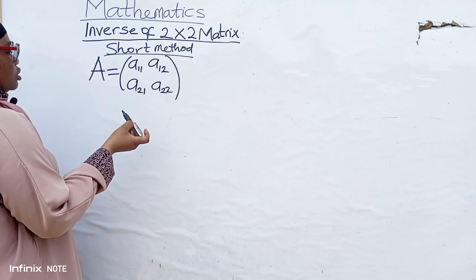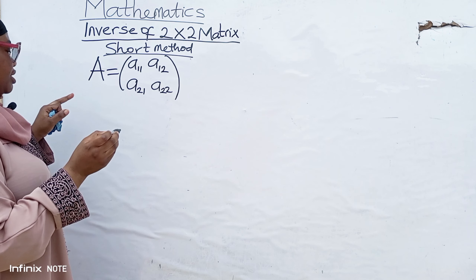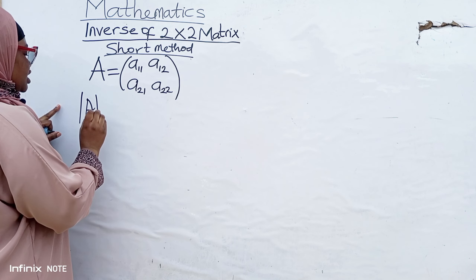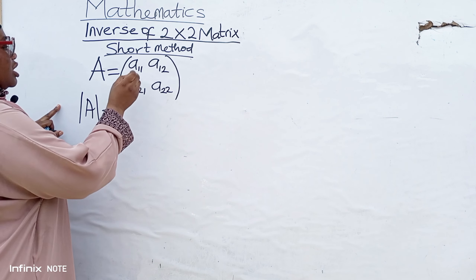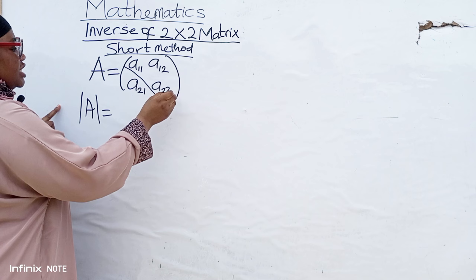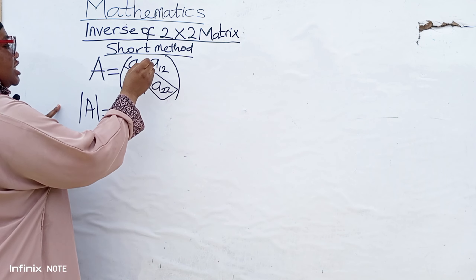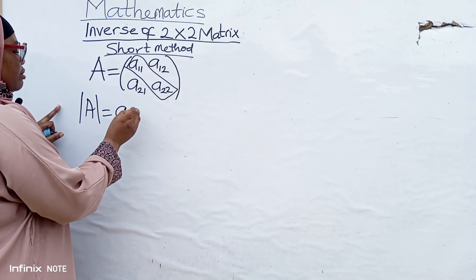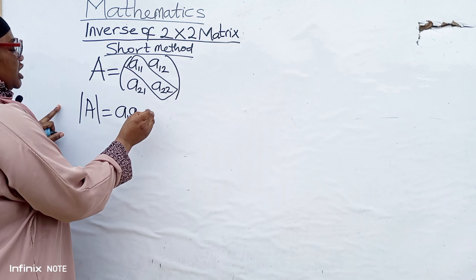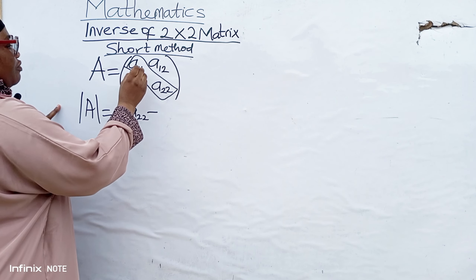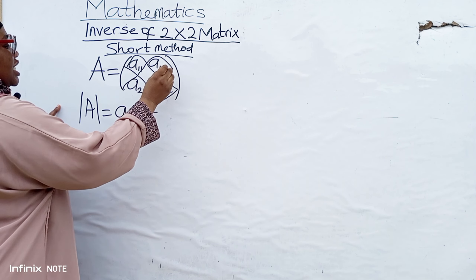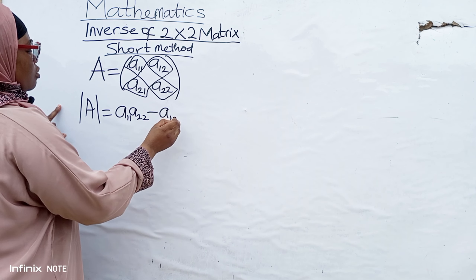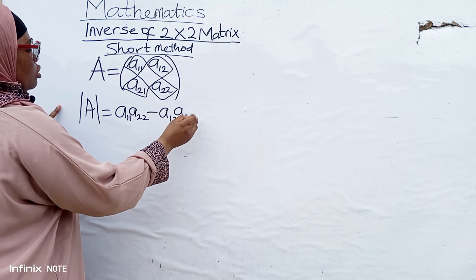What you are going to do first is find the determinant of A. To find the determinant of a 2 by 2 matrix, you multiply the elements in the leading diagonal together — that will be A11 multiplied by A22 — then minus the multiplication of elements in the second diagonal, which is A12 multiplied by A21.